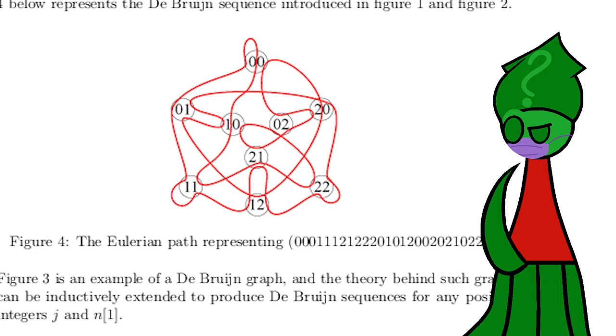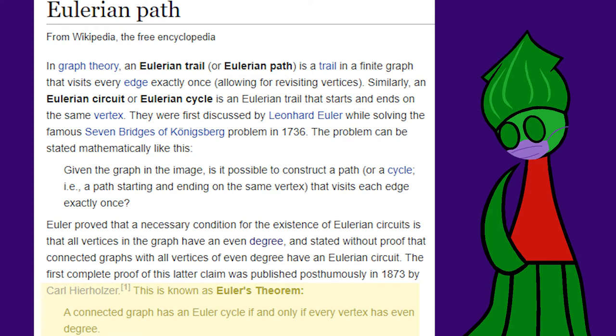How can we be sure this works for any order over any sized alphabet? Another mathematician, Heierholzer, proved a connected graph has an Euler cycle if and only if every vertex has even degree.